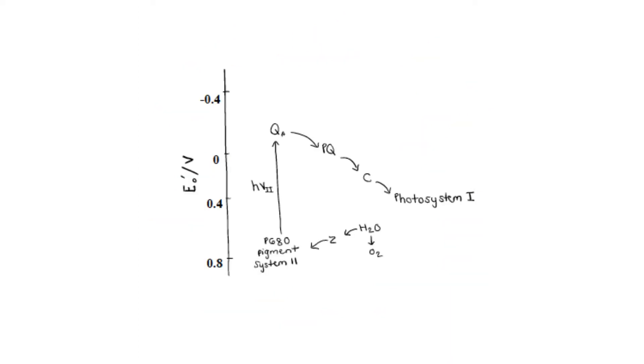The reduction potential of P680 is very high, around 1.2 to 1.4 volts. This is required of the water splitting reaction in the OEC for oxidizing water into O2 and H+. The reduction potential of the oxygen is 0.815 volts. Since this reduction potential is less than the reduction potential of P680, the four electrons from the OEC are easily transferred to P680.